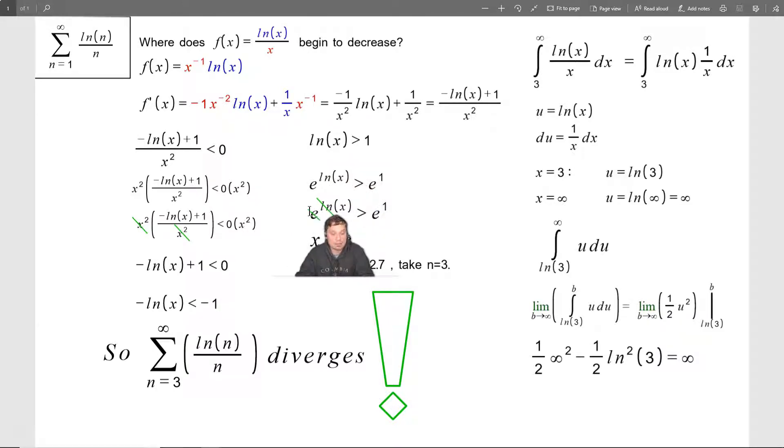And then I cross off the e and ln because they're opposites. So on the left side, I end up with just x is greater than e.